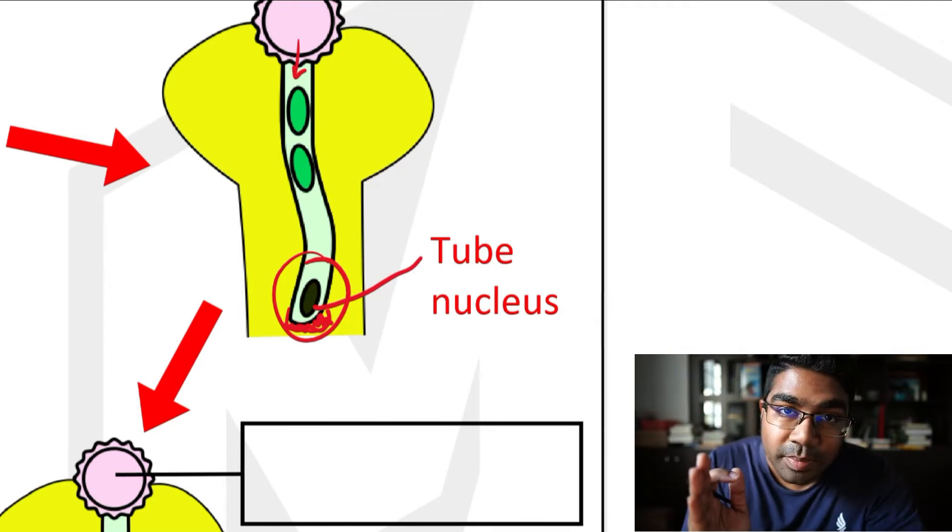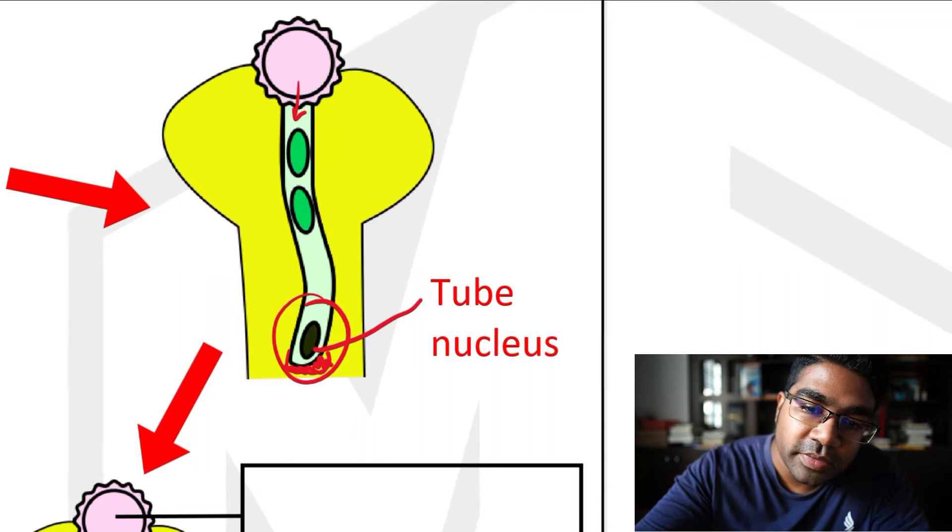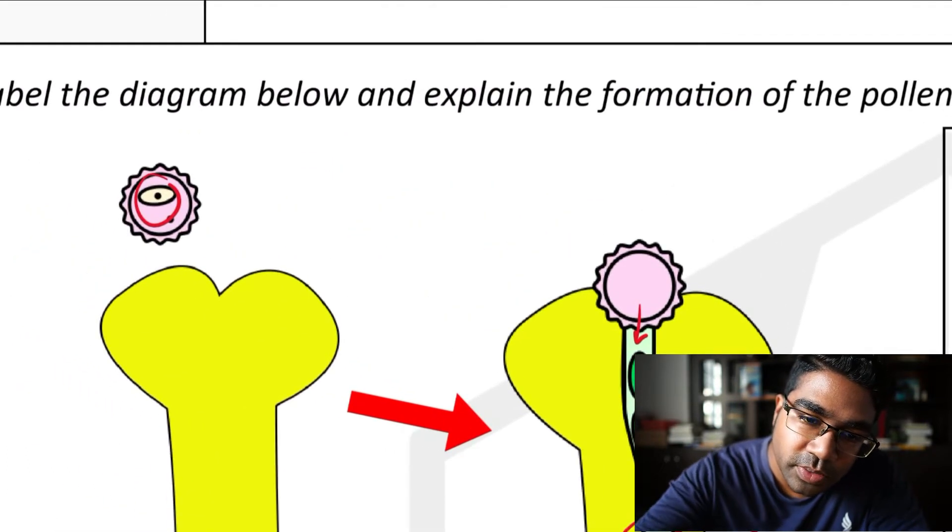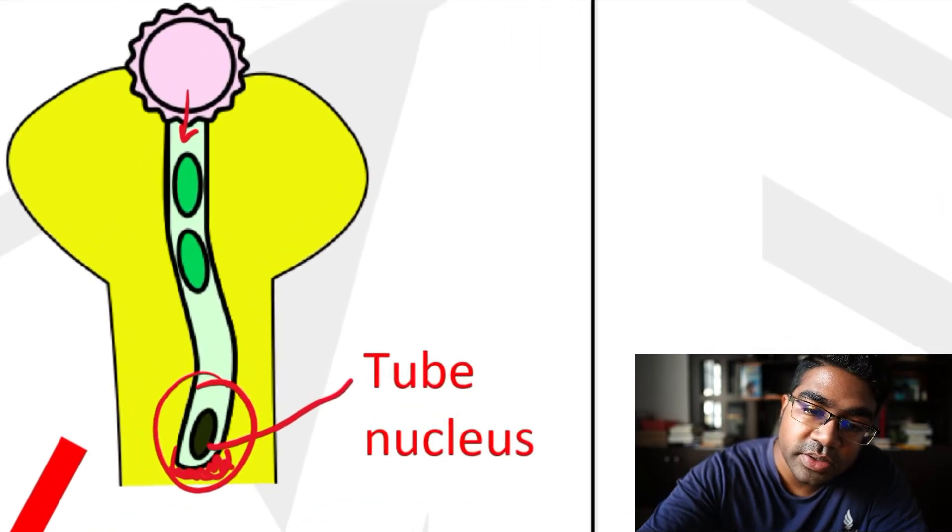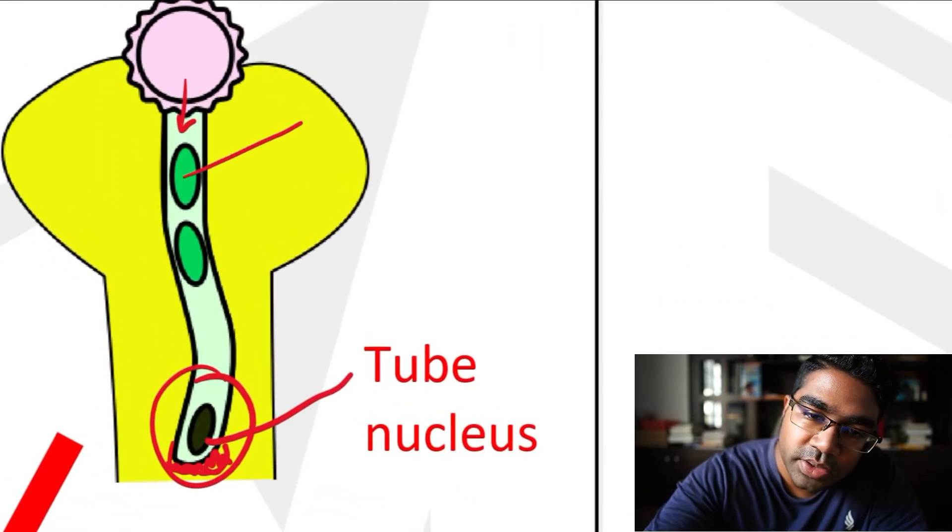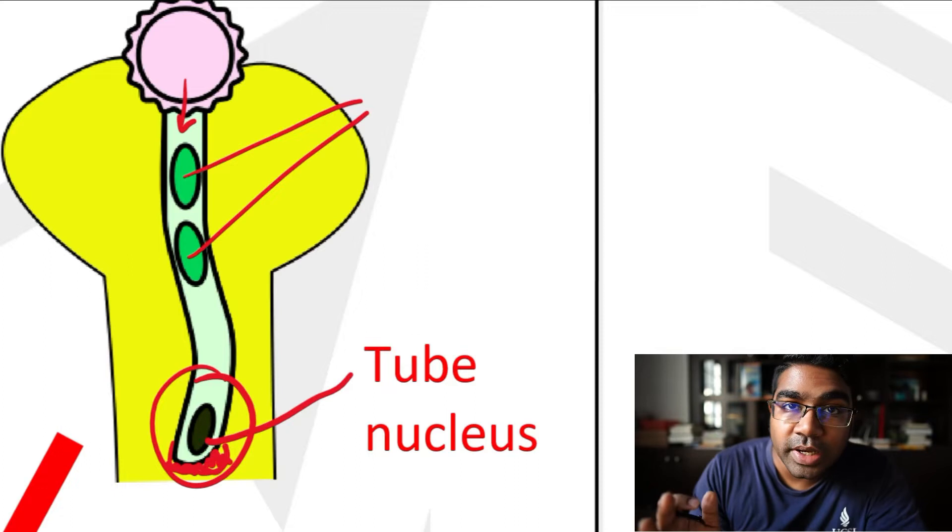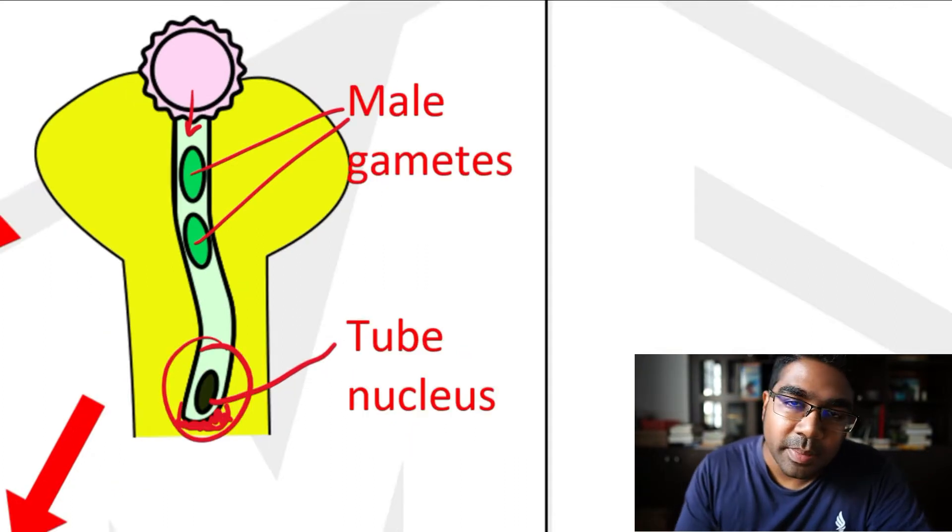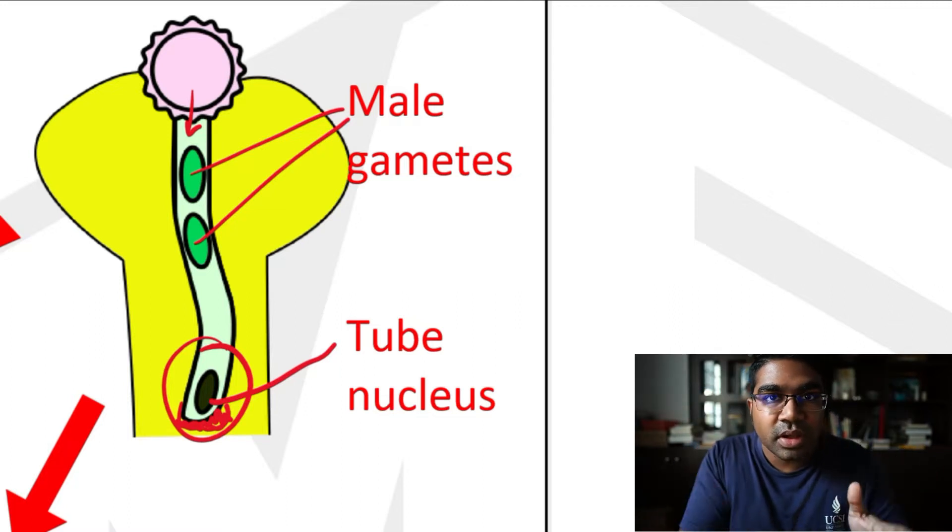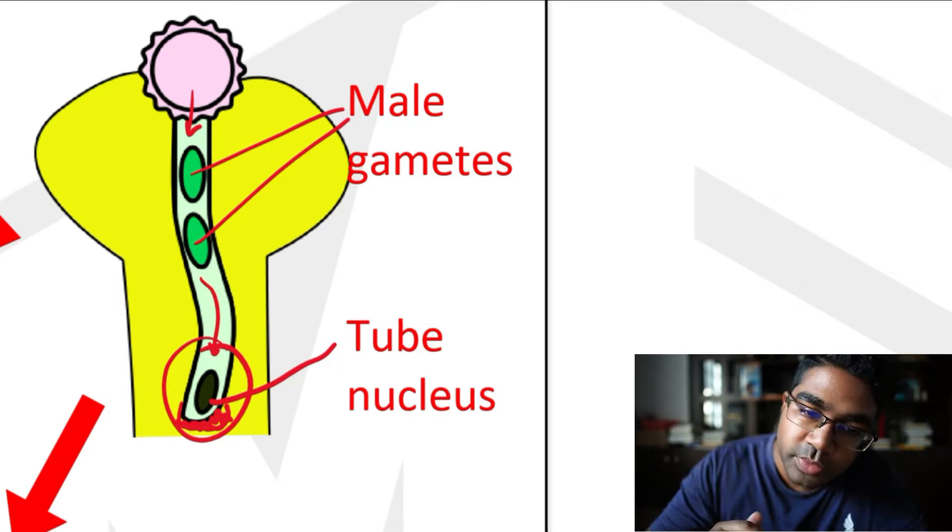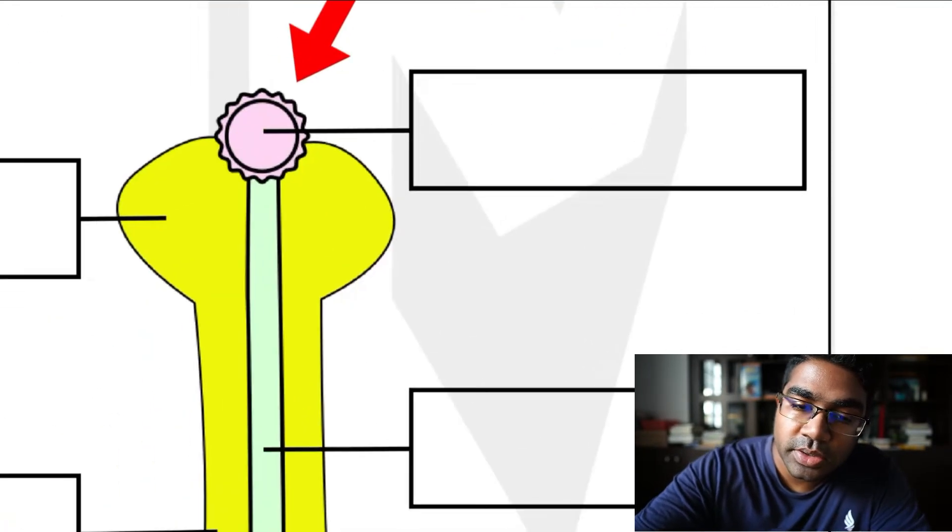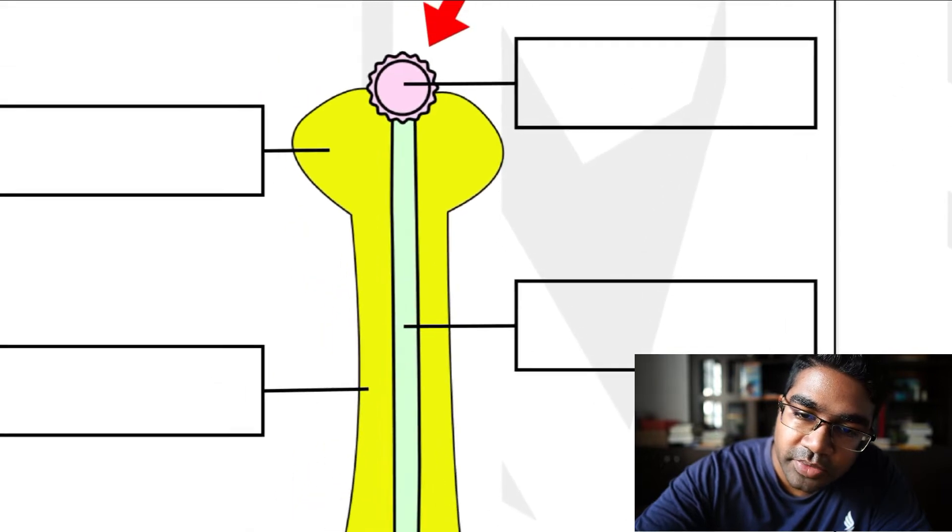While this happens, the generative nucleus, remember earlier there was only one generative nucleus, but now the generative nucleus is going to divide by mitosis to form these two nuclei, which are called the male gametes. So these are how the male gametes are formed from mitosis of the generative nucleus. And the male gametes are just going to follow behind the tube nucleus. And the tube nucleus will continue to go down and penetrate the style.